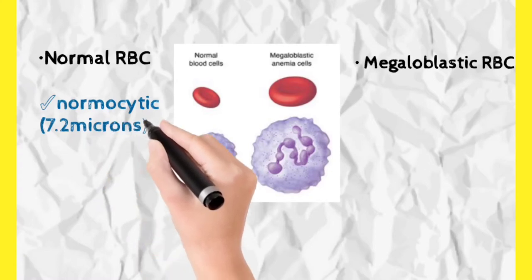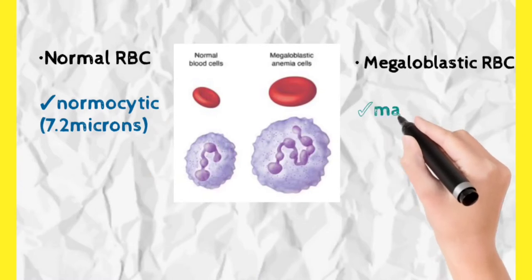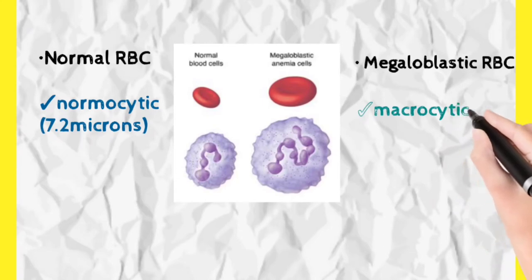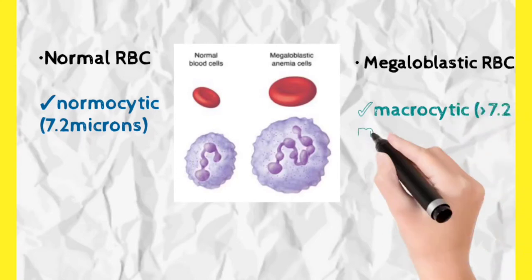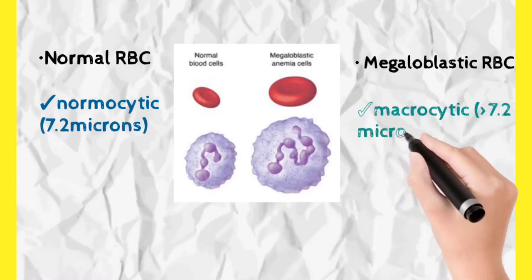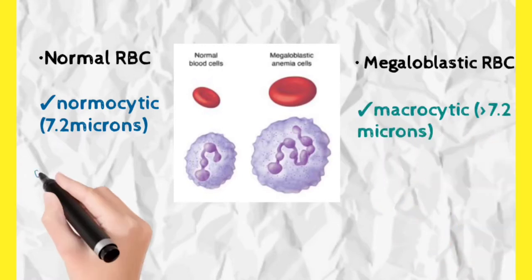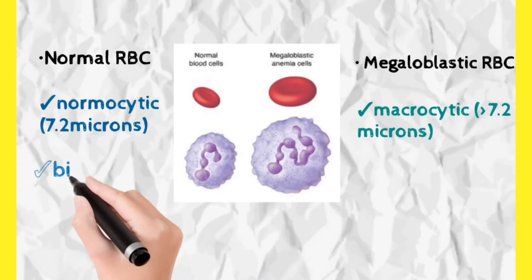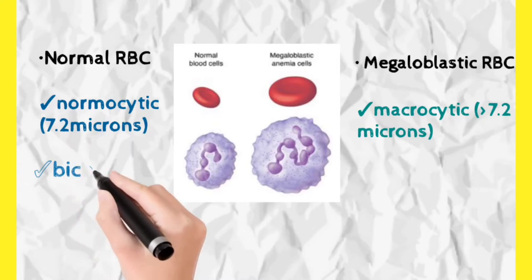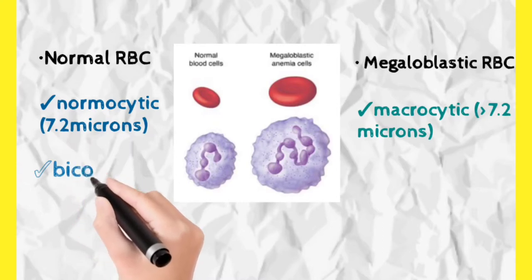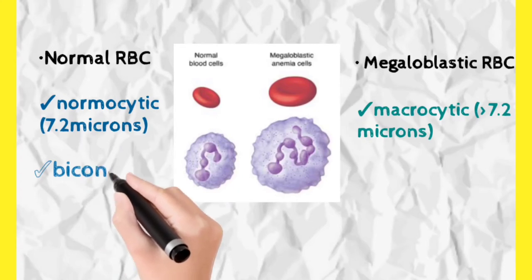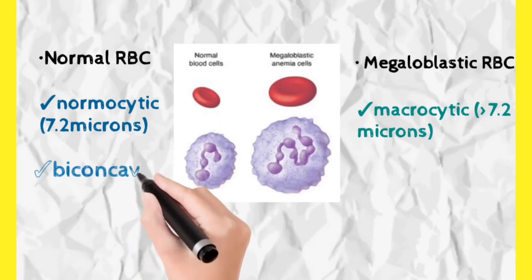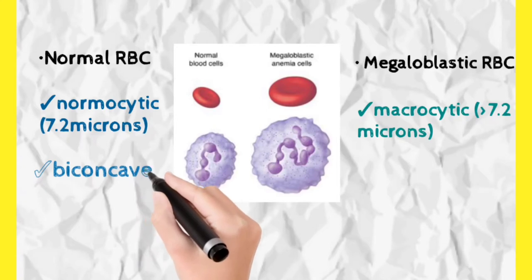Micro means 10 to the power of minus 6. Normal RBCs are biconcave in shape because of absence of nucleus. But megaloblastic RBCs are oval in shape because nucleus persists in them — due to impaired DNA synthesis, nuclear maturation does not happen properly. So normal RBCs are biconcave due to absence of nucleus, while megaloblastic RBCs are oval due to presence of nucleus.